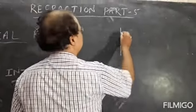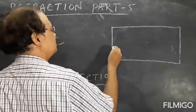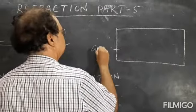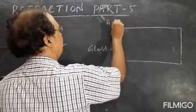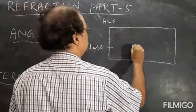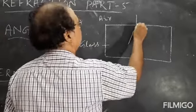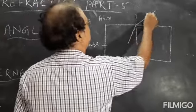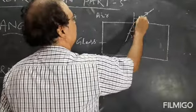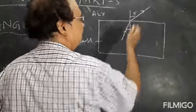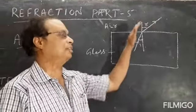When light passes from denser to rare medium — say this is the denser glass and this is the air — it bends away from the normal. The angle of incidence and angle of refraction: light bends away from the normal when it passes from denser to rare medium.